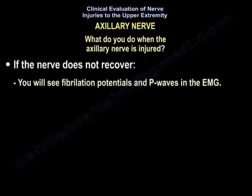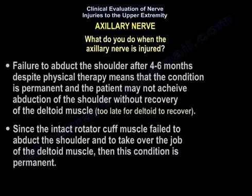However, if the nerve does not recover, you will see fibrillation potentials and positive sharp waves in the EMG. Failure to abduct the shoulder after four to six months despite physiotherapy means the condition is permanent, and the patient may not achieve abduction of the shoulder without recovery of the deltoid. Since the intact rotator cuff muscle failed to abduct the shoulder and take over the job of the deltoid, this condition is permanent.